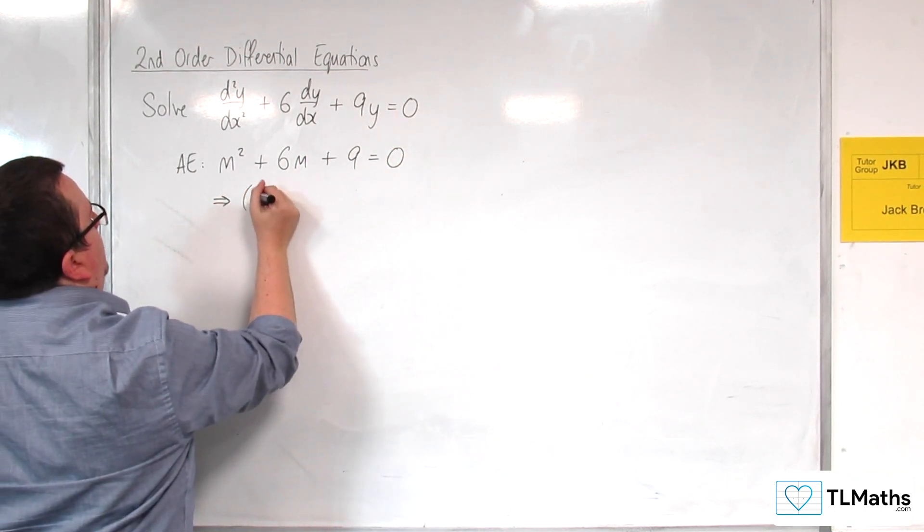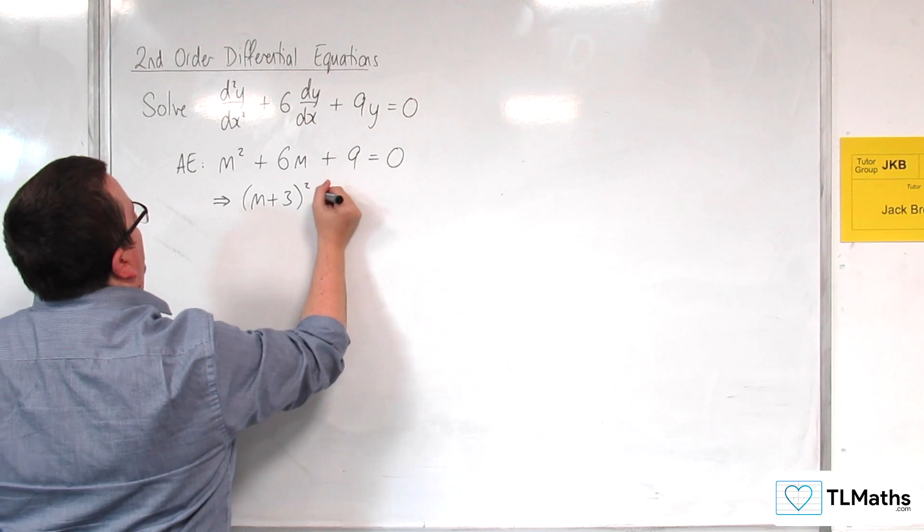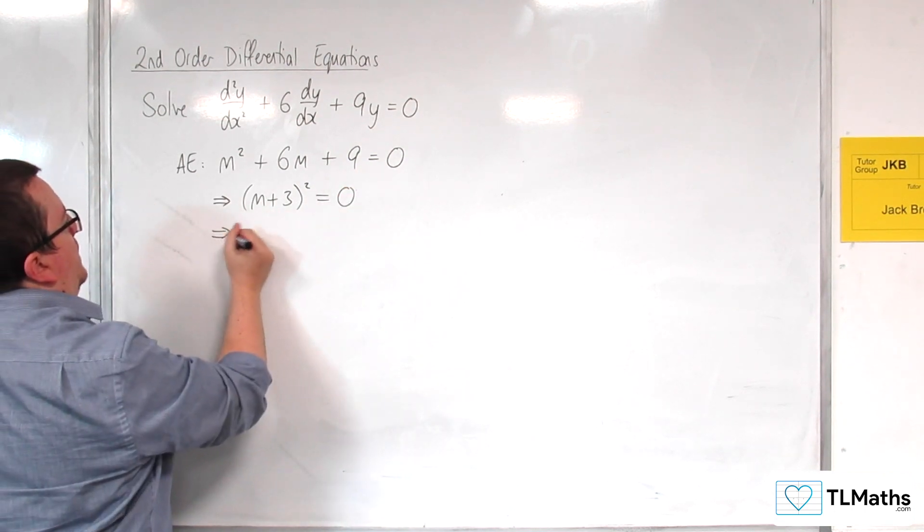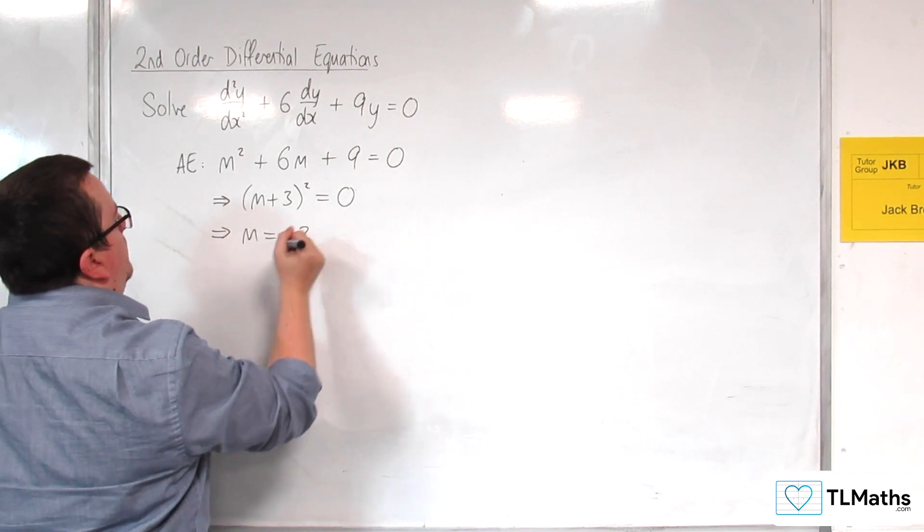The left-hand side factorizes to (m + 3)² = 0, and then we've got m = -3.